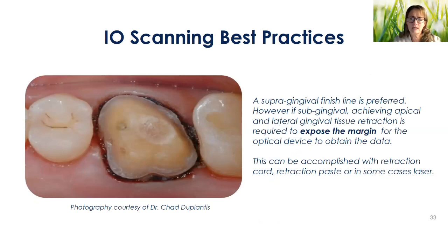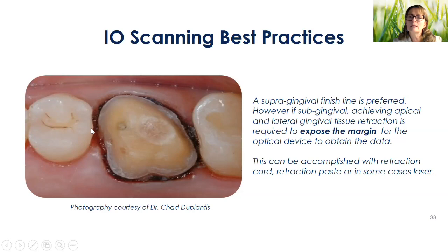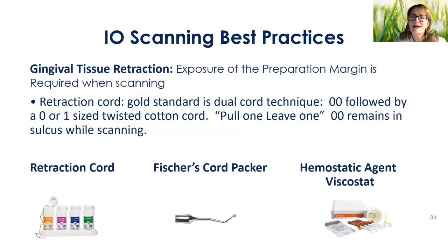The next best practice is gingival tissue retraction — we want apical and lateral retraction of that tissue to ensure we can see the finish line 360 degrees and have a well-exposed margin. How might you achieve this? I'm probably a little old school. I like a double cord technique where I take a double or triple zero cord first to the exact circumference of the prep and place it, then follow up with maybe another double zero, a number one, or a number two, depending on the periodontal health of the tissue and how much the sulcus can really take.